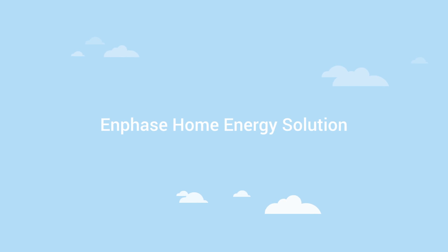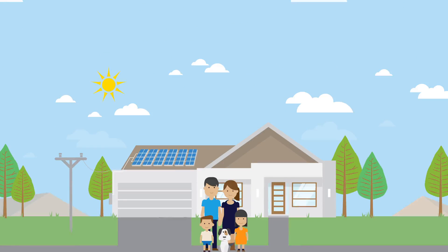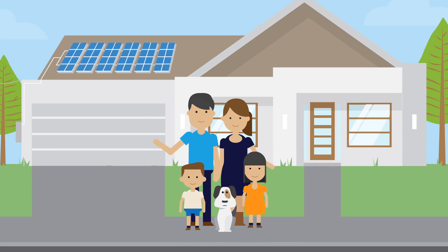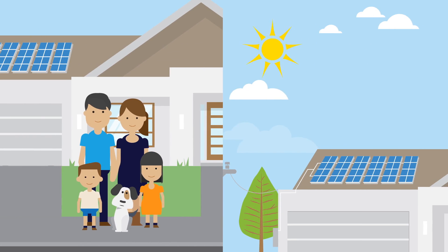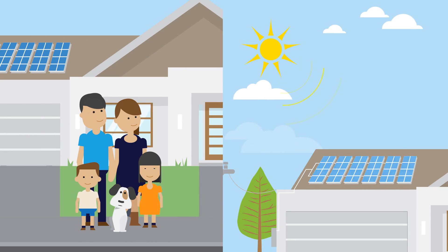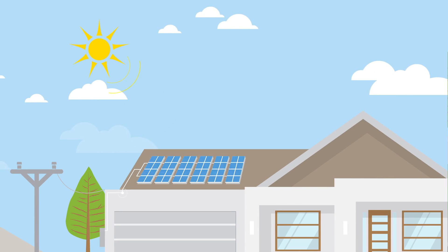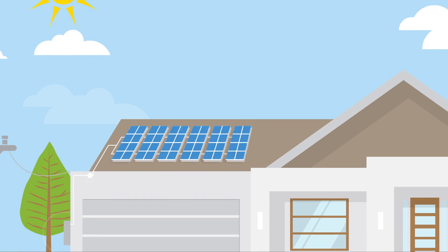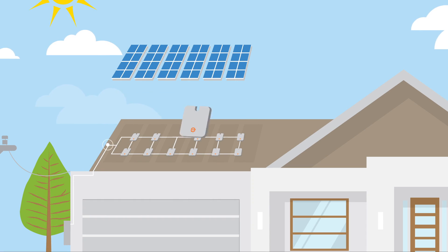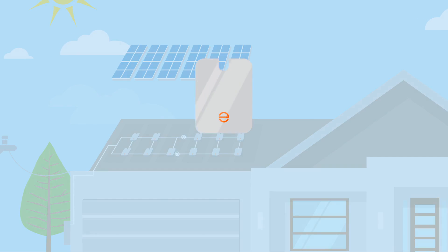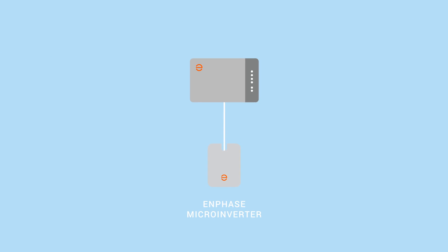Welcome to the Enphase Home Energy Solution, a simple system that delivers clean energy for you and your family. Harnessing the free and abundant power of the sun to drive this system, the Enphase solution puts a small microinverter under each solar panel on your roof, allowing you to maximize power production.